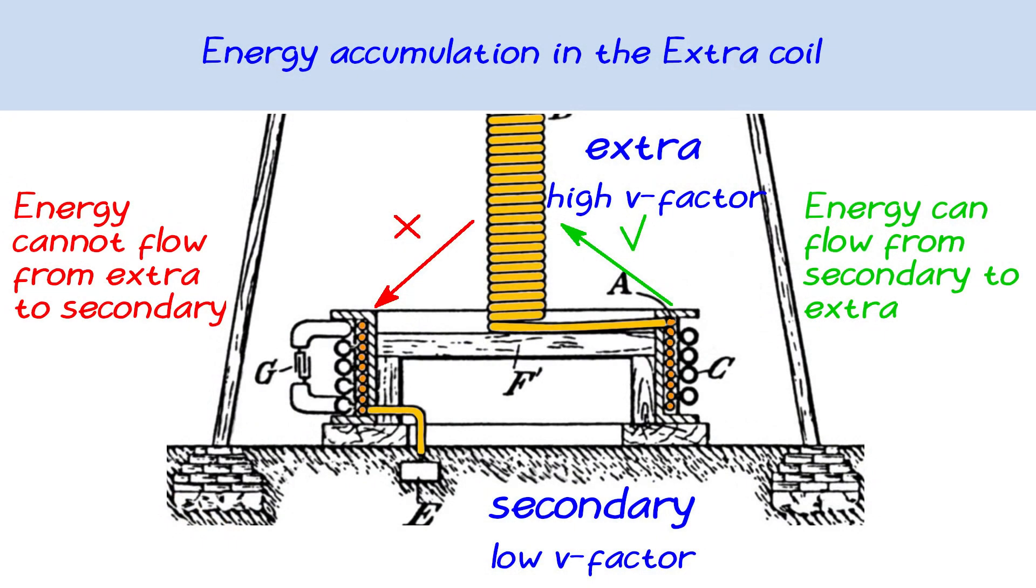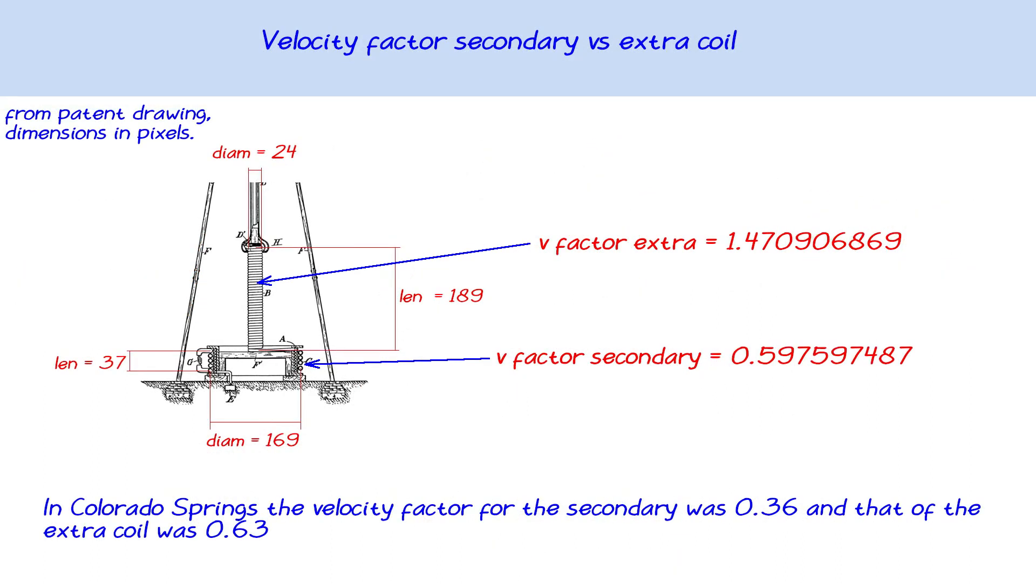As you want the energy to accumulate in the extra coil, this coil should have a high velocity factor, and the secondary should have a low velocity factor. We see this in the Colorado Springs situation, but also in all of Tesla's drawings.